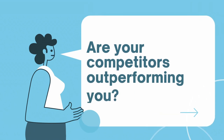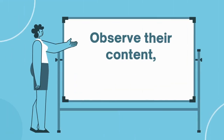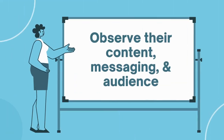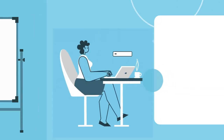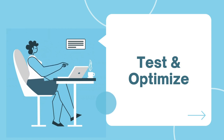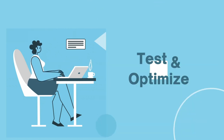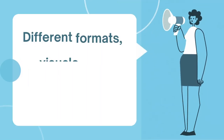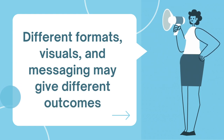Are your competitors consistently outperforming you? Take a closer look at their content, messaging, and audience to identify opportunities for improvement. Next is to test and optimize. Before you can truly optimize your content, you need to start testing it out. Try different formats, visuals, and messaging to see what performs best.